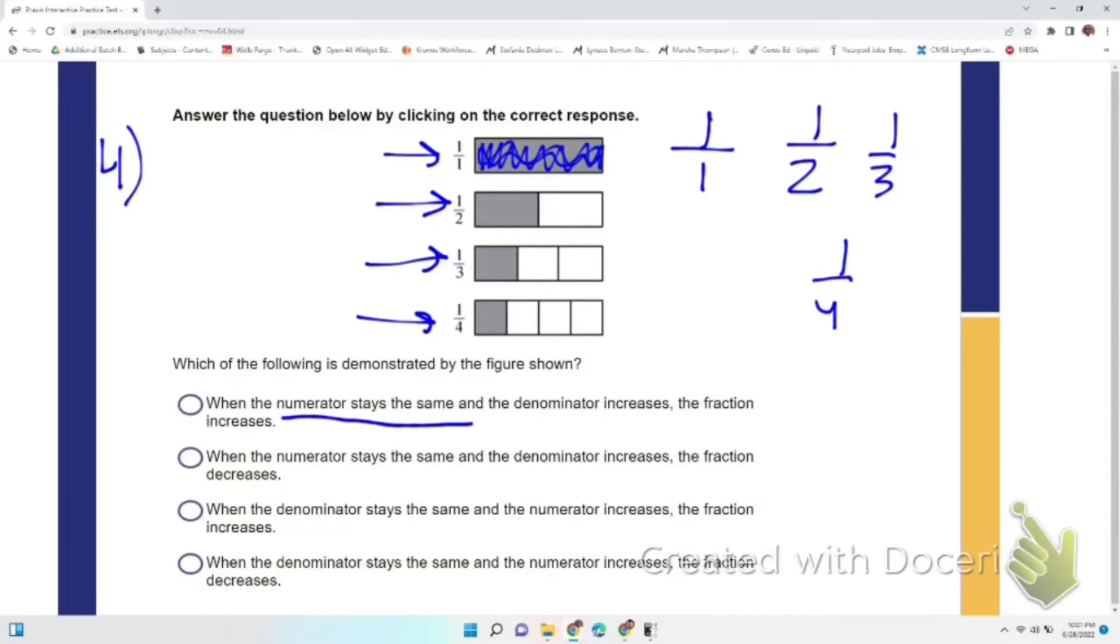As this says right here, the numerator stays the same. This one says the denominator stays the same. So these are not it, because the denominator is not staying the same. It's growing.